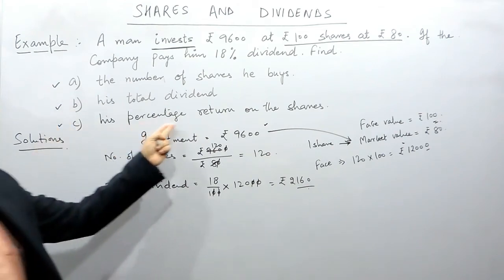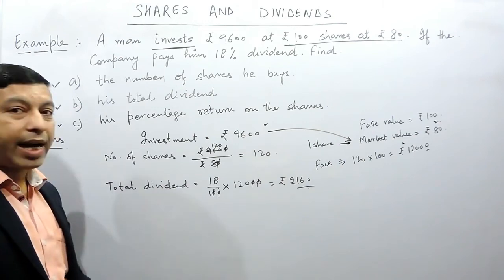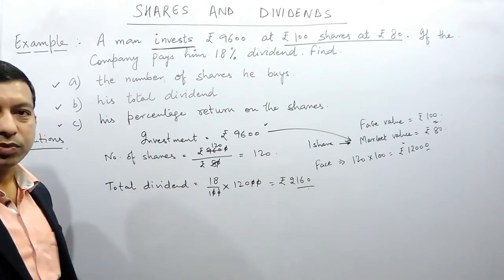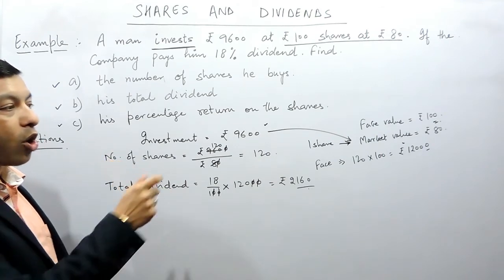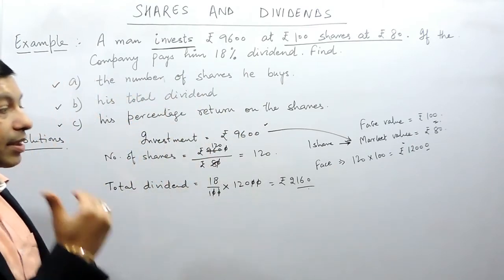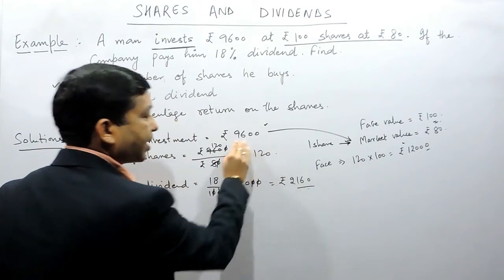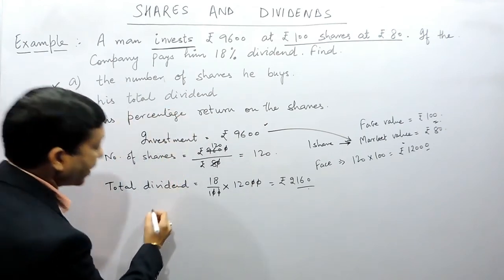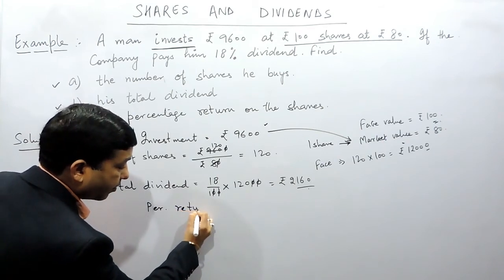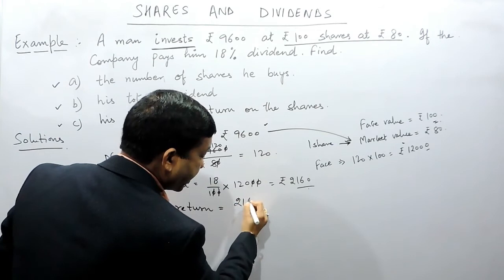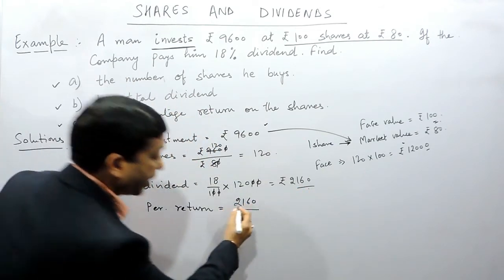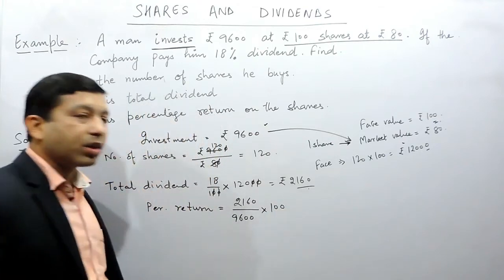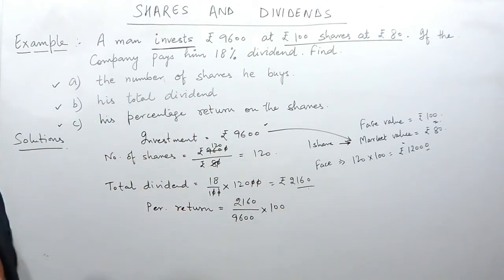The third portion is his percentage return on the shares. The company pays rupees 2,160 and the shareholder also receives rupees 2,160. However, the company calculated this on rupees 12,000, while the person who purchased the share calculates it on rupees 9,600, because his actual investment today is only rupees 9,600. So the percentage return on investment equals 2,160 divided by 9,600, multiplied by 100.